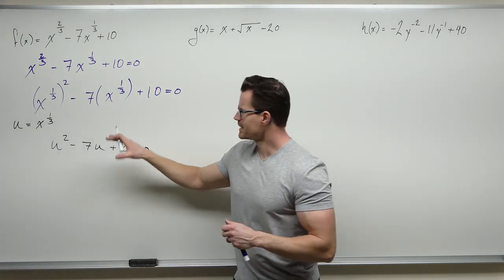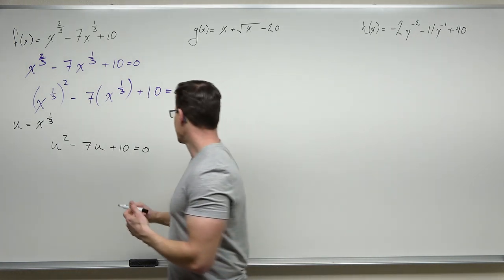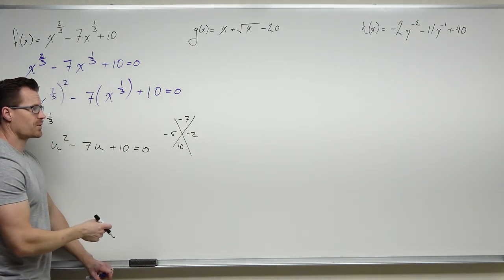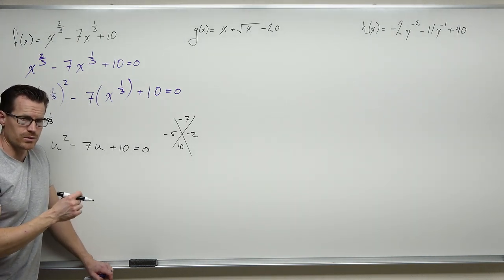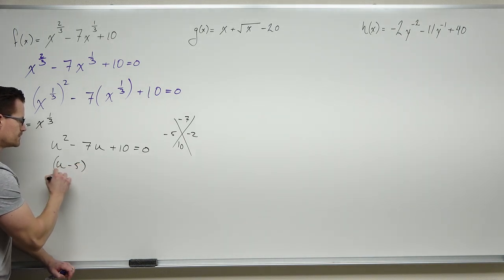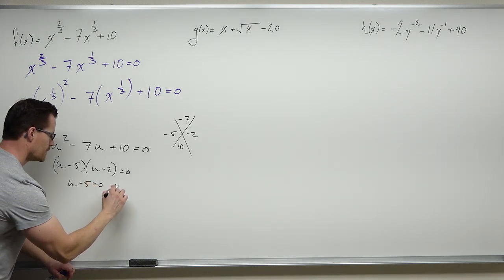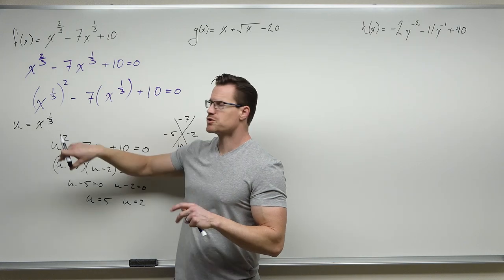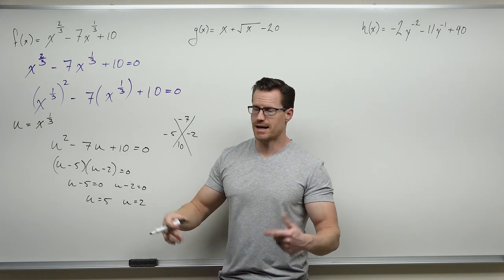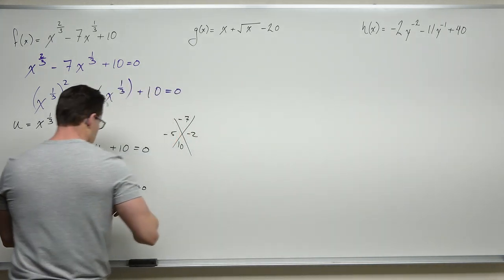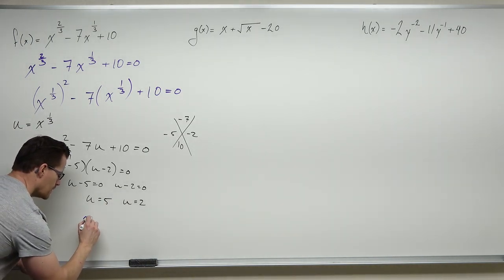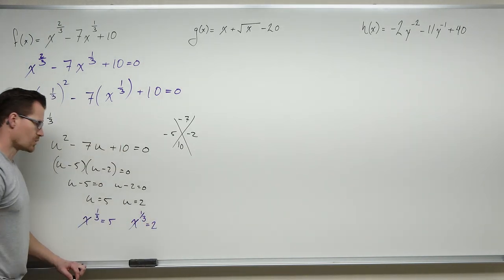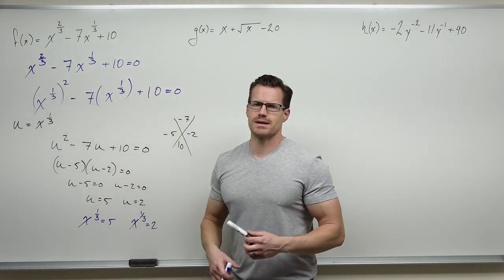Factoring as quickly as possible: this is (u−5)(u−2) equals zero. Using any factoring technique that works for you, we know that u equals 5 and u equals 2. We're still in terms of u though, so we want to get back to x. We use the same substitution twice: once to get away from x's into u's, and once to get back. Since u equals x to the one-third, u equals 5 becomes x to the one-third equals 5, and u equals 2 becomes x to the one-third equals 2.